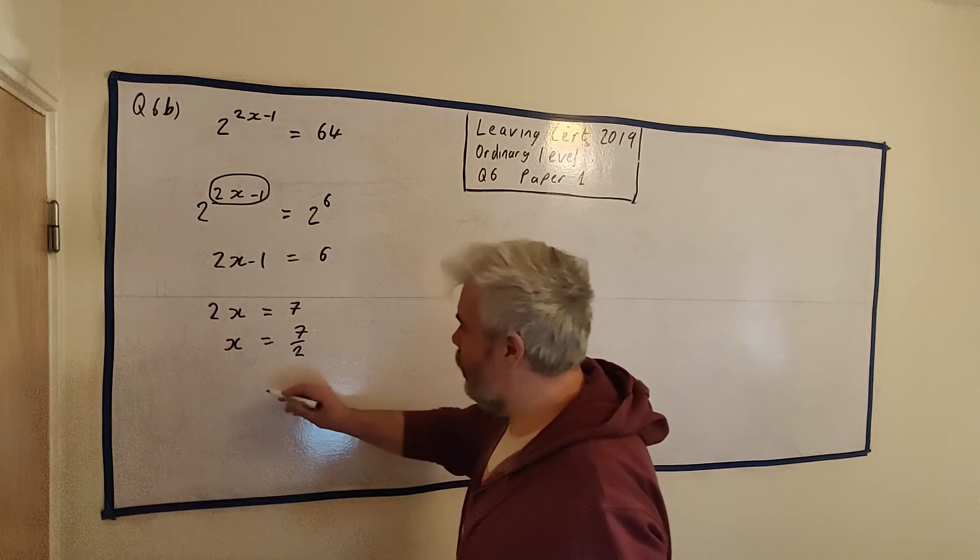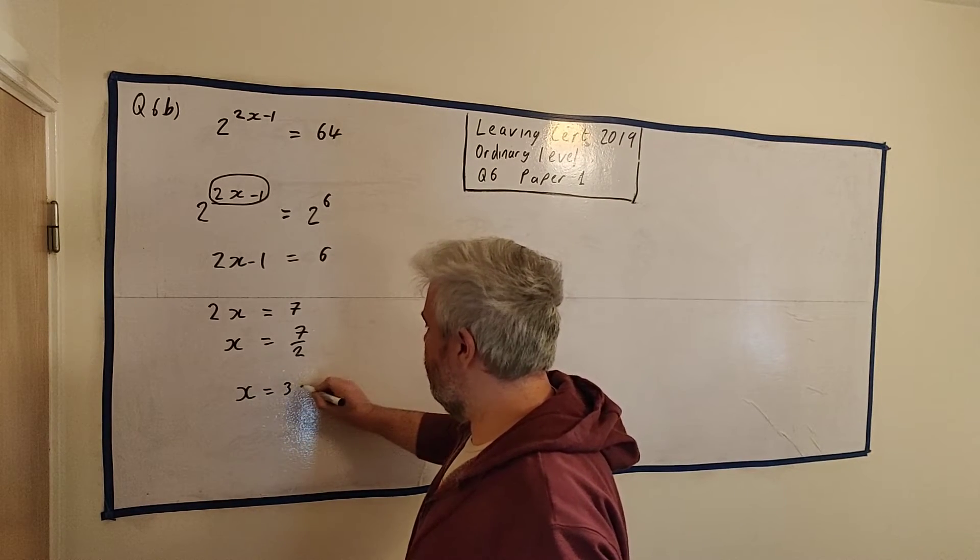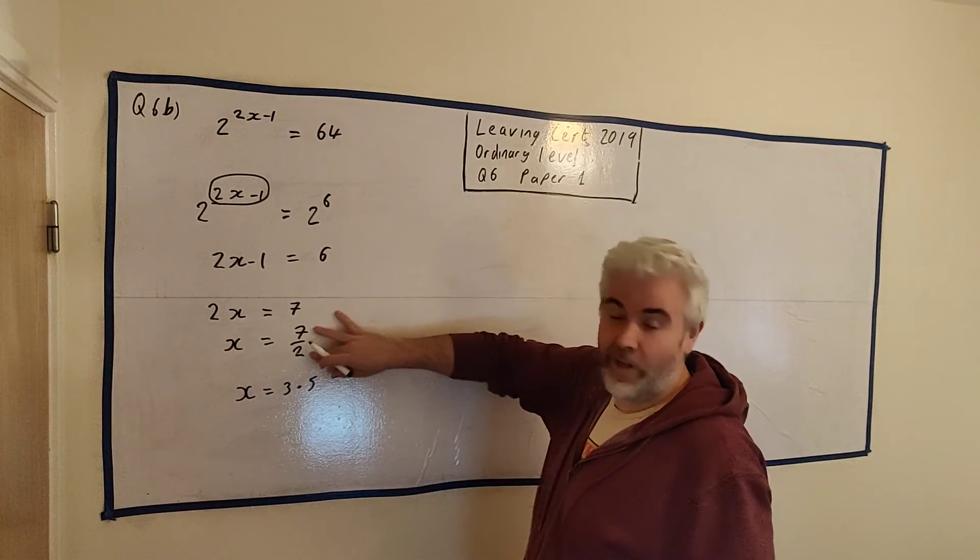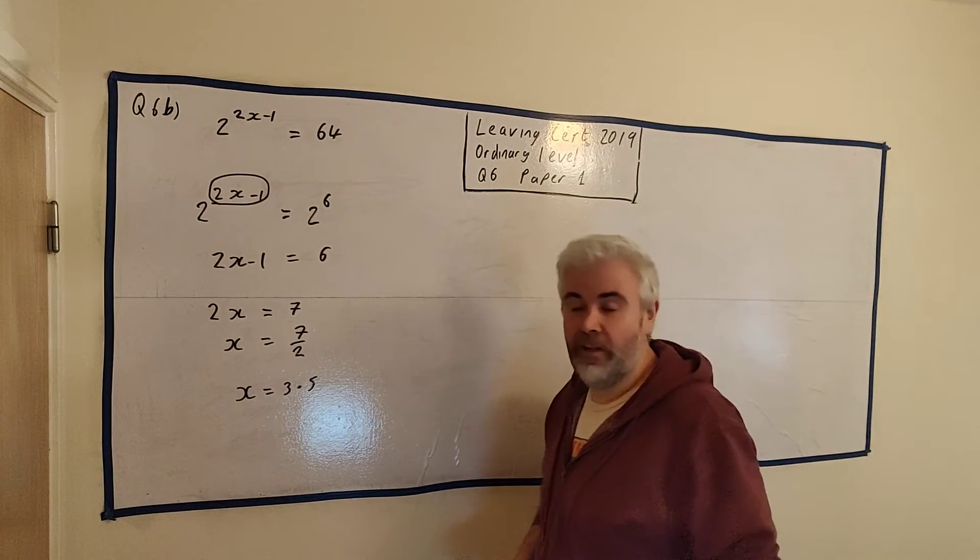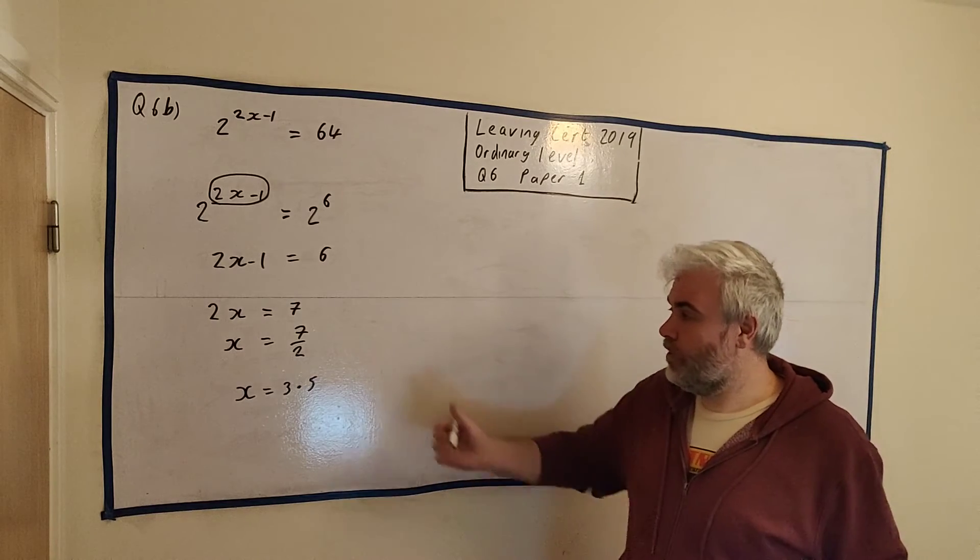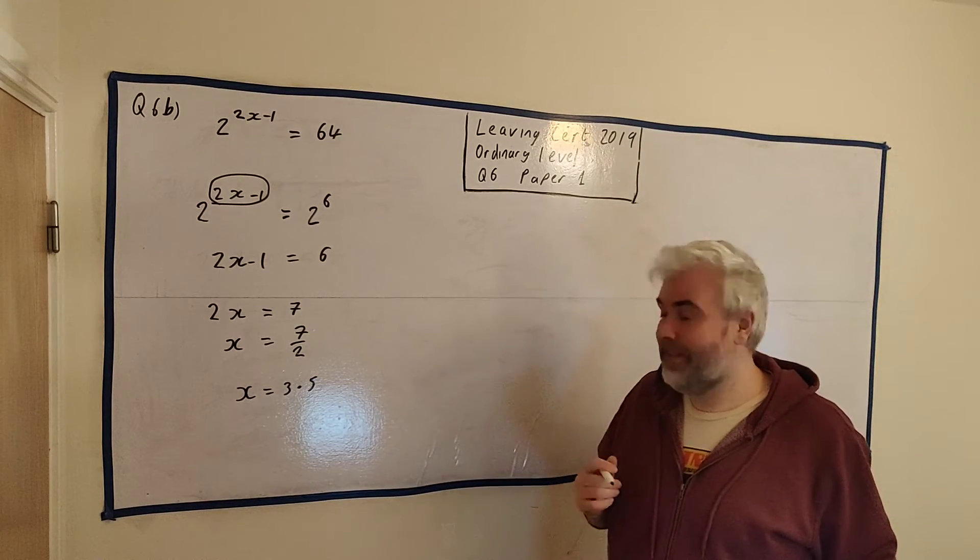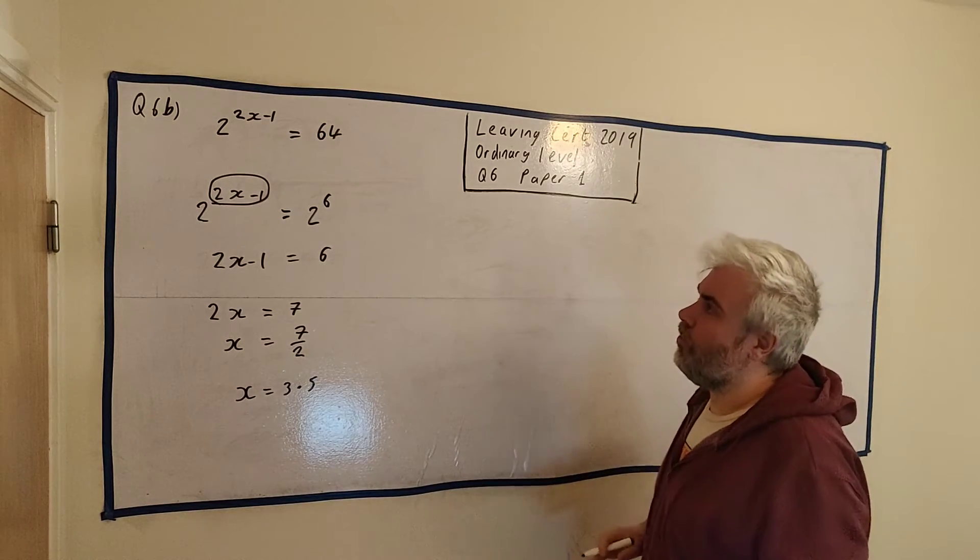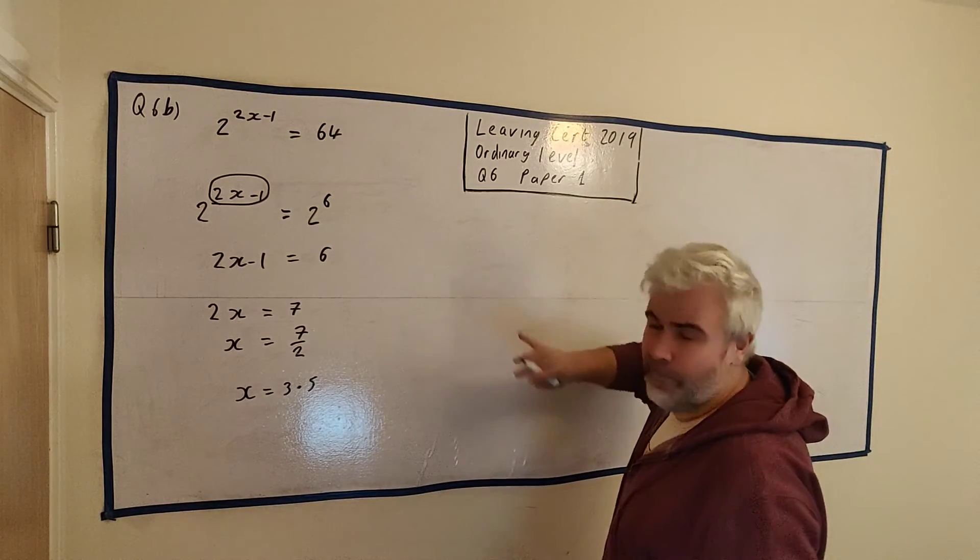That's our final answer. That's everything you need. They want to know what x is equal to. They didn't ask you for a decimal. If you did write x = 3.5, that's okay. I don't like it. I'd much rather a fraction. A fraction is much easier to look at in maths. We use fractions much more in maths. You need to get used to it. Anyway, this is your final answer. I did promise I'd show you a different way to do it.